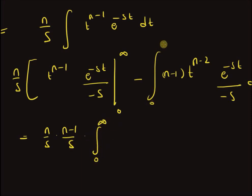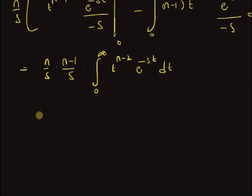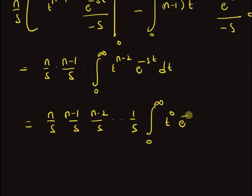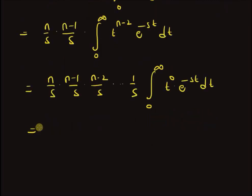By continuing this process — repeatedly applying integration by parts until the power of t becomes 0 — we get n/s × (n-1)/s × (n-2)/s × ... × 1/s, and we are left with the integral from 0 to infinity of t^0 · e^(-st) dt, which equals n factorial over s^n times that remaining integral.